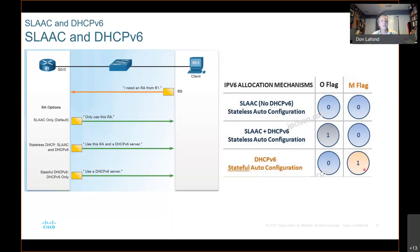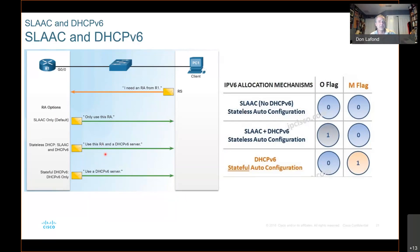What happens is the router solicitation is sent from the client out to the world. The router responds — if it's SLAAC only, then it just says here's everything you need, use only this router. That's the first option: zero, zero, zero with a one in the A position. The second option, stateless DHCPv6 — SLAAC and DHCPv6 — use this router advertisement but reach out to the server for everything else.